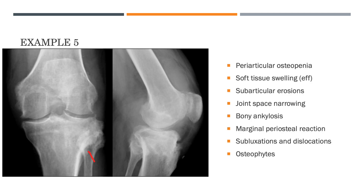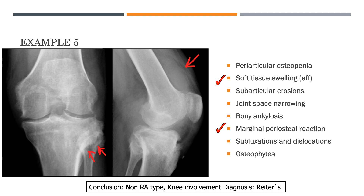Here is a patient with soft tissue abnormality in the form of a large suprapatellar joint effusion. Looking carefully, there are whiskering calcifications at the proximal tibia and distal femur. Because of the large joint involvement with a joint effusion and this whiskering periosteal reaction in the lower extremity, this is a pretty typical presentation of Reiter's disease.